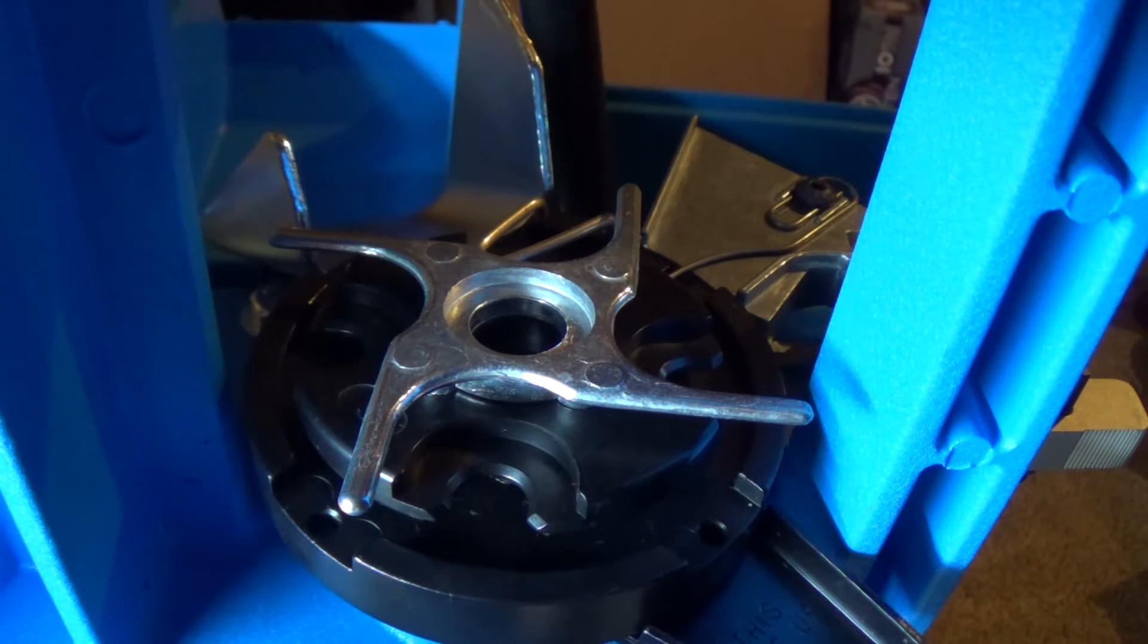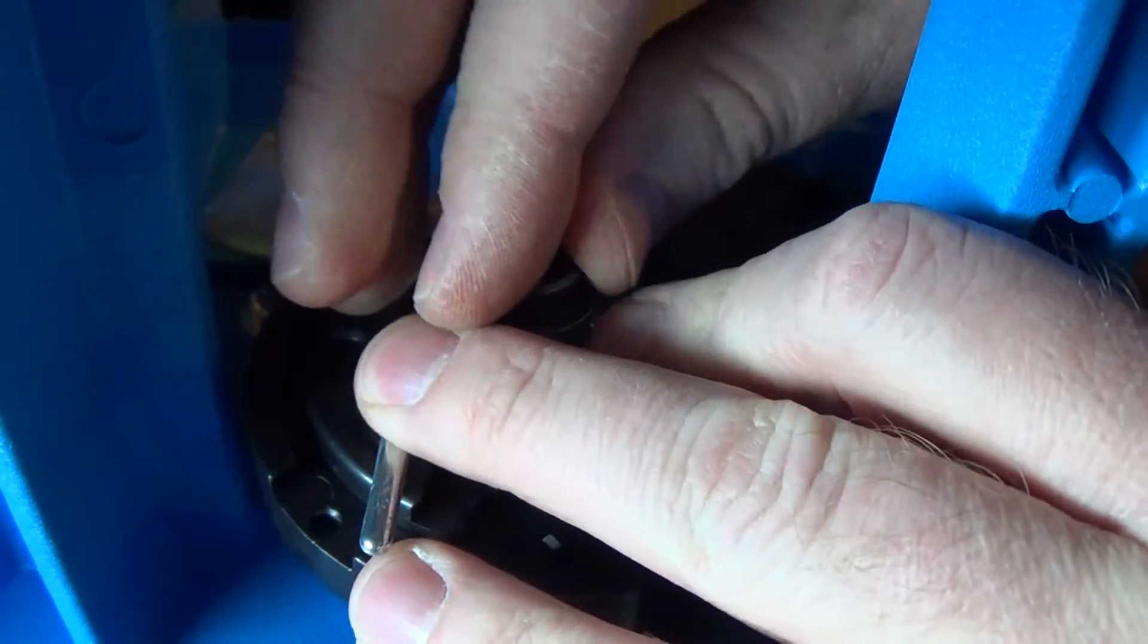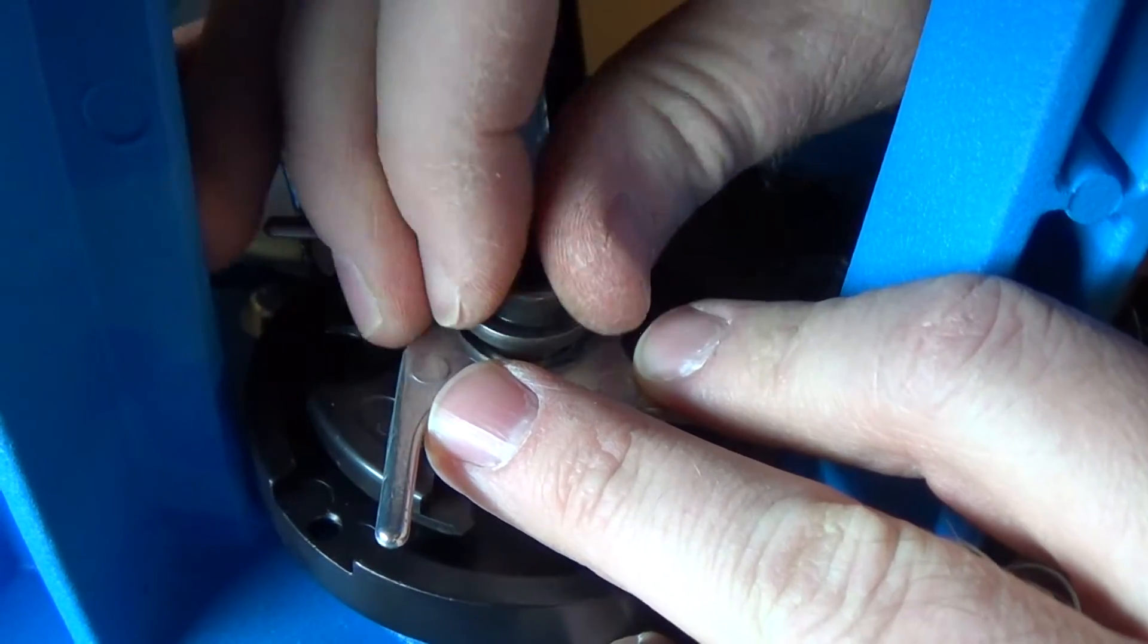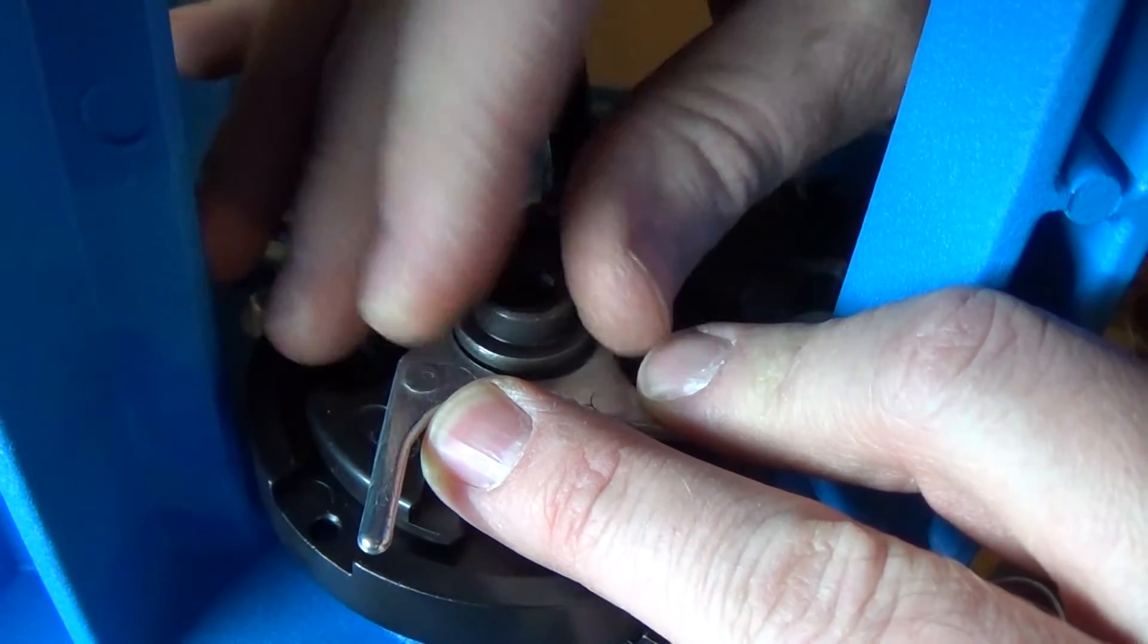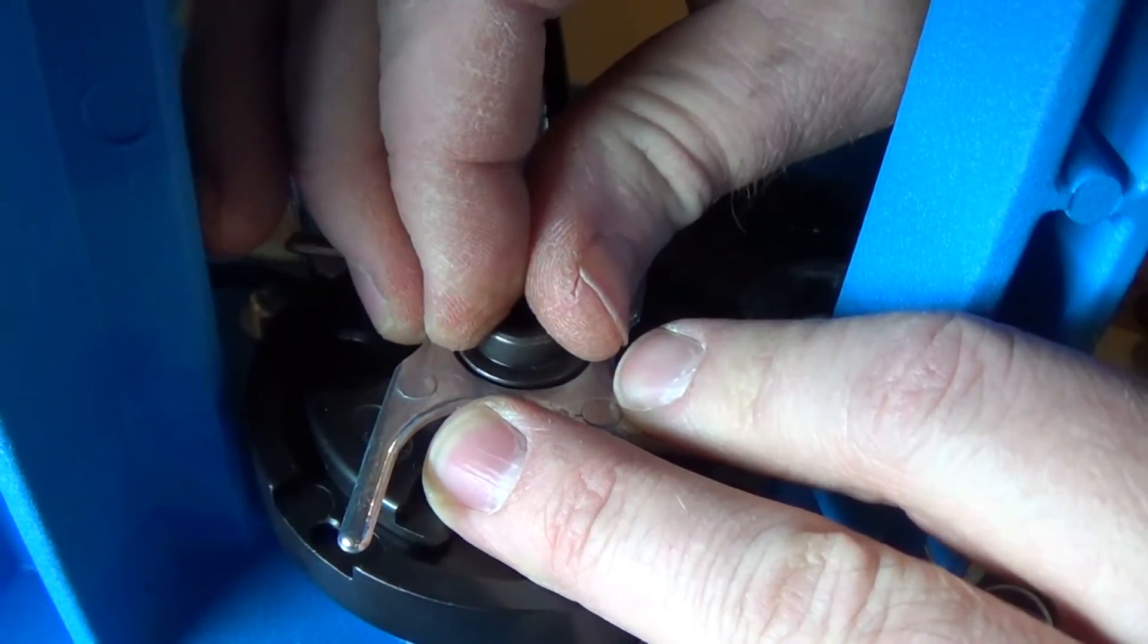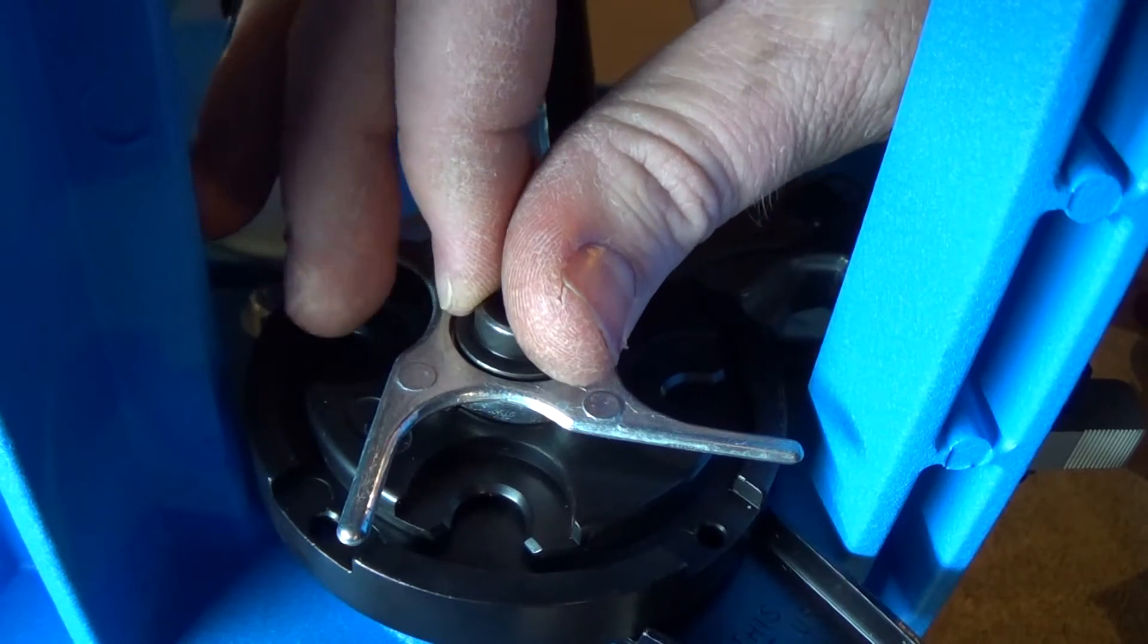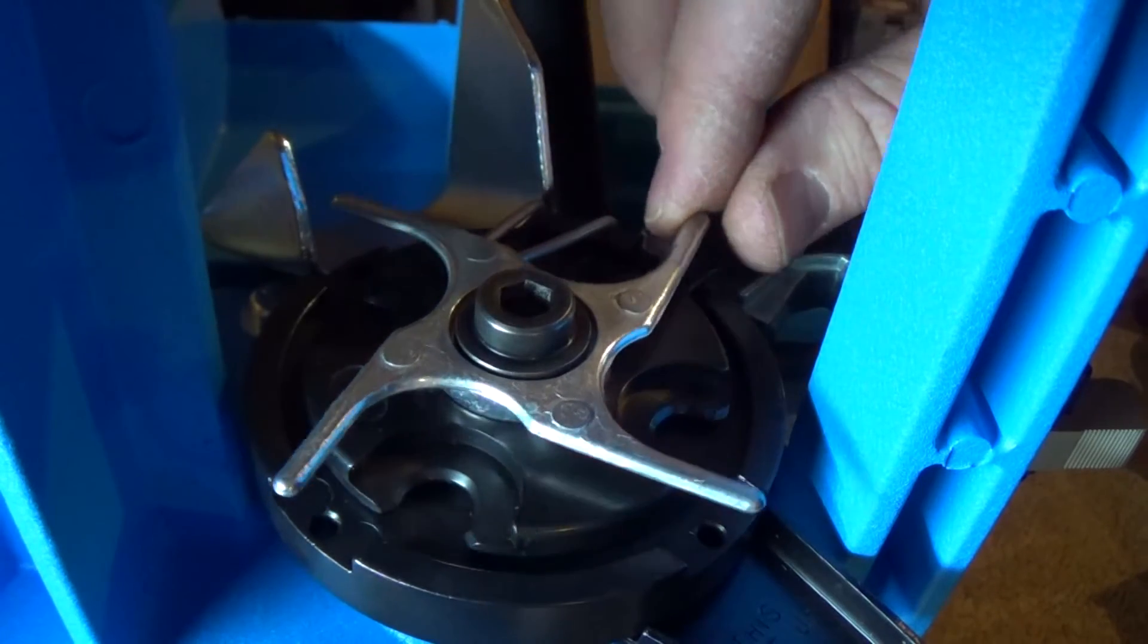Now, we are going to insert the, I will insert the shell plate bolt through the sprocket. Tighten it all the way down. Make sure I am not cross threading it. All the way down and then I am going to back it off. It says slightly. I don't know what that means. I will do maybe a quarter turn.